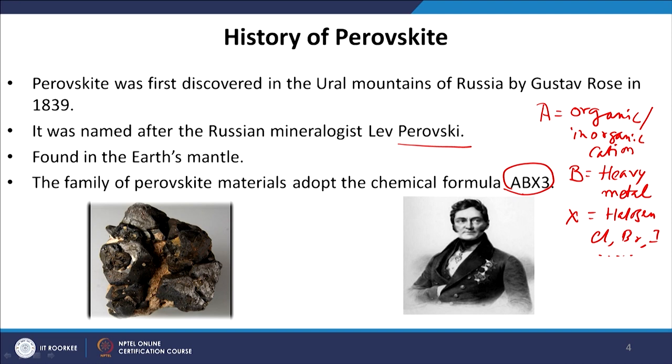One of the very commonly studied inorganic perovskites is barium titanate, BaTiO3. Calcium titanate is also widely studied. These two perovskite materials have been studied extensively for their ferroelectric properties. Later on, people found that by suitable substitution of the organic cation and changing the structure, we can always fabricate the perovskite structure with a tunable band gap, and once realized, the application of perovskite in optoelectronics began.